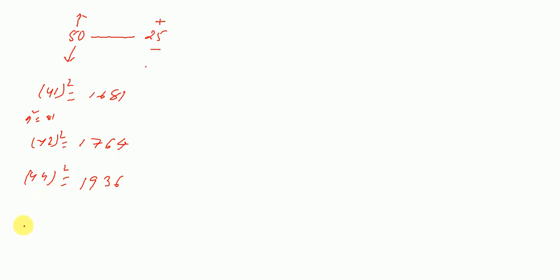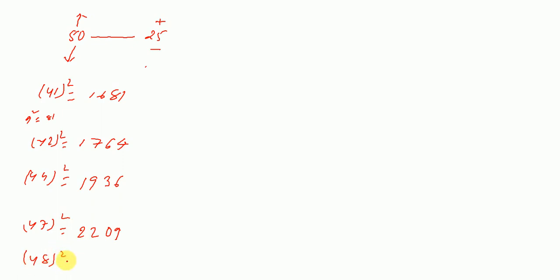For 47 squared, we have 22 and 09, so 47² = 2209. For 48 squared: 50 minus 48 is 2. Two squared is 4 — write in 2 digits: 04. Two less than 50 means subtract 2 from 25, giving 23. So 48² = 2304.